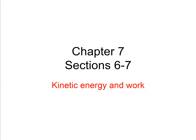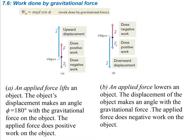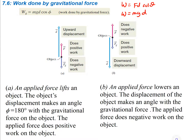In this lecture we're going to cover sections 6 and 7 of chapter 7, discussing kinetic energy and work. Now we want to look at the work done by a gravitational force, which is just going to be mgd cosine theta. Remember, work is equal to force times distance times cosine theta. When the force is gravity, you plug in mg for that — so work equals mg times distance times cosine theta.